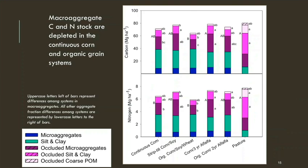This next figure shows the carbon and nitrogen stock in macro aggregates — instead of adding up to 100% of soil weight, we're adding up to the total stock of carbon and nitrogen. You can see the forage systems have more macro aggregate carbon and nitrogen, while the organic system is notably depleted in macro aggregate carbon and nitrogen, as is the continuous corn and strip-till system to a lesser extent, but especially the organic system.